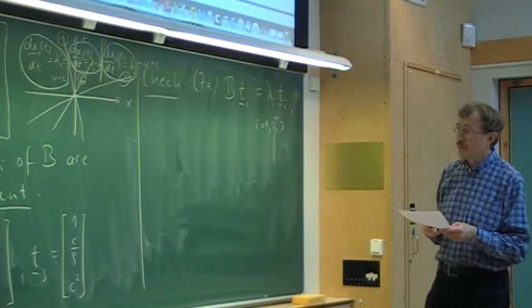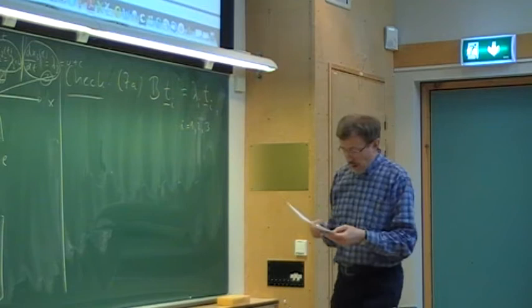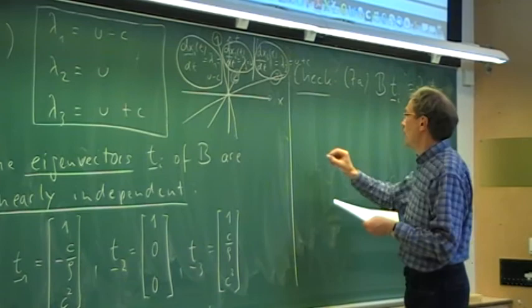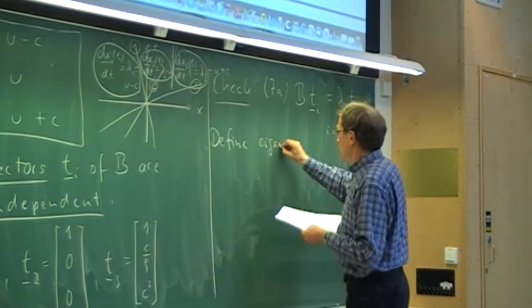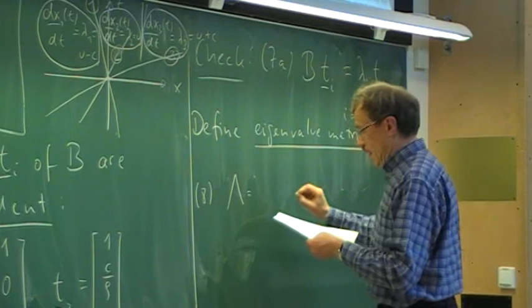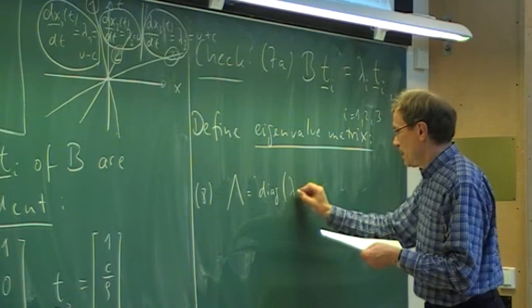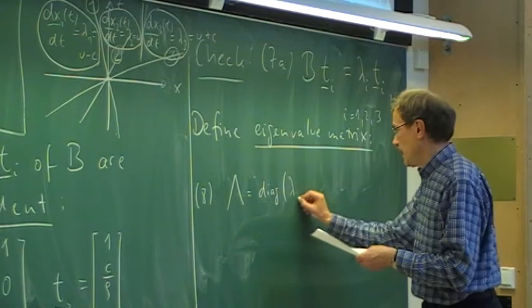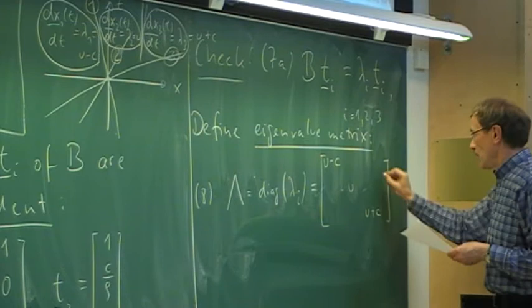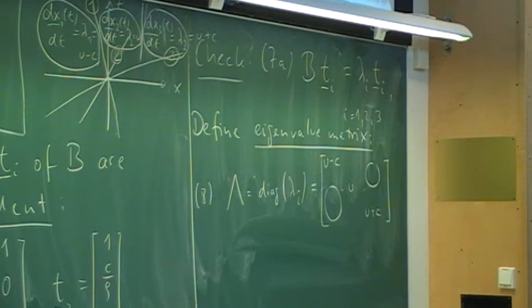We continue our journey in linear algebra and define an eigenvalue matrix, which we call capital Lambda. It is a diagonal matrix containing the eigenvalues lambda_i on the diagonal — in our case, u − c, u, and u + c, with zeros elsewhere. We can also define an eigenvector matrix, which we call capital T, made up of the eigenvectors as columns.